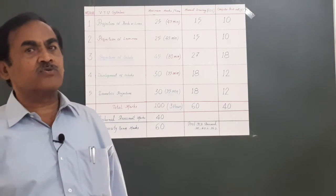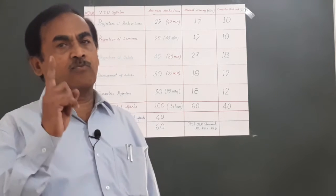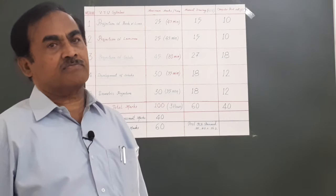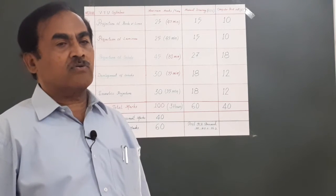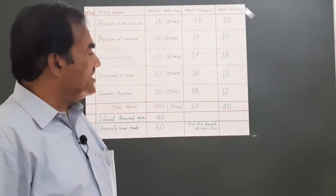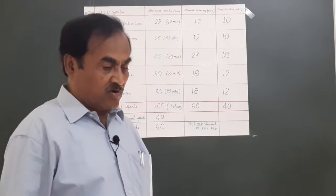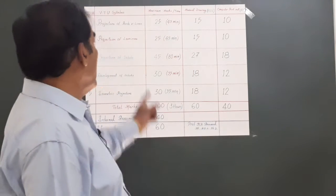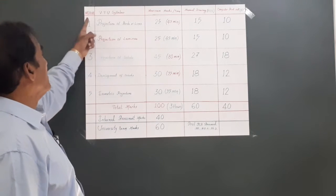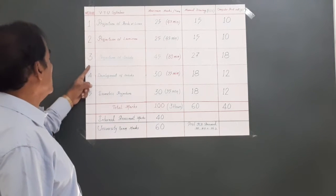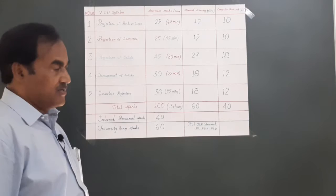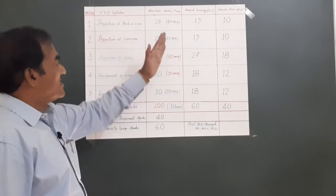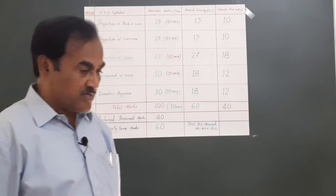This carries 100 marks in the examination. In VTU syllabus we have 100 marks, same as any other university. The syllabus of this engineering graphics is divided into five modules as I have shown here: module one, two, three, four, and five. Every module's marks allocation is also shown here.